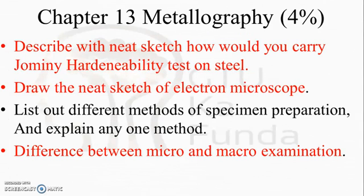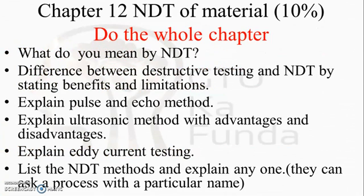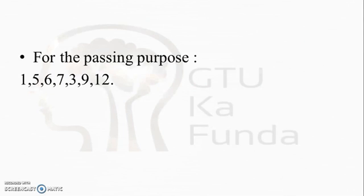Chapter 13 is Metallography, the last chapter, carrying four percent of weightage. Key questions: describe with a neat sketch how to carry out the Jomini hardenability test on steel; draw the neat sketch of an electron microscope; list different methods of specimen preparation and explain any one method; difference between micro and macro examination. If you have any doubt in the NDT part, go through the particular testing methods carefully as a single method can be asked for seven marks. This chapter is straightforward as per GTU criteria.